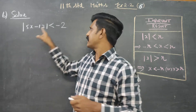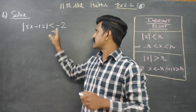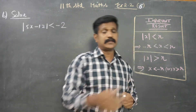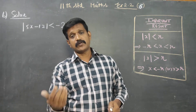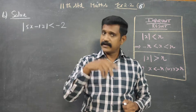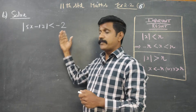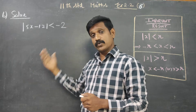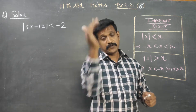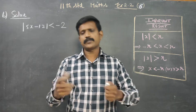But here, absolute value is less than minus 2. Minus 2 or less — that means minus 3, minus 4, minus 5, minus 6, minus 7. Absolute value cannot be negative; it is always positive. So getting a positive absolute value less than minus 2 is not possible.